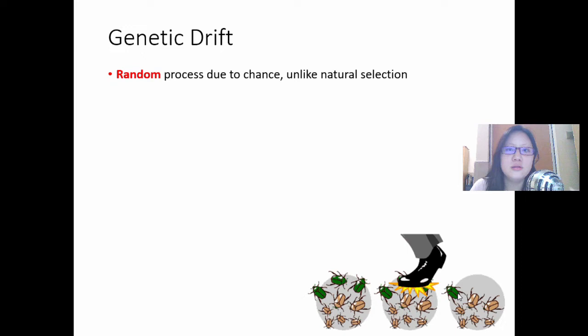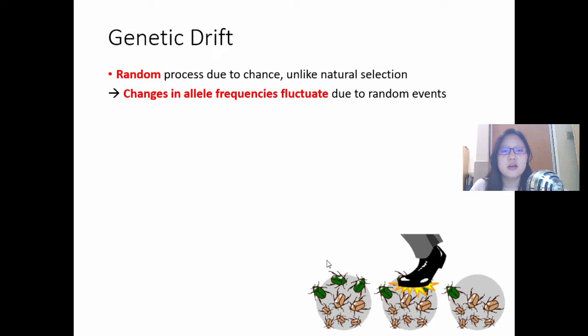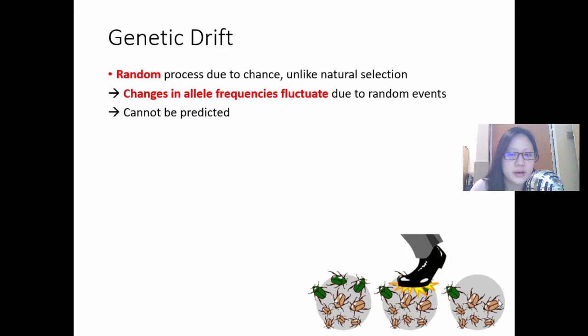This is a random process, and therefore changes in allele frequencies usually fluctuate — a little bit up and down always in nature due to random events. And this cannot be predicted. You cannot predict whether the brown one gets stepped on more or the green one will get stepped on more. It's a random process.